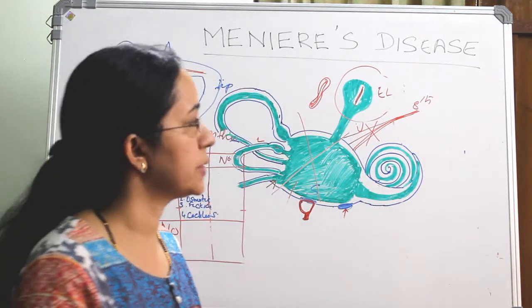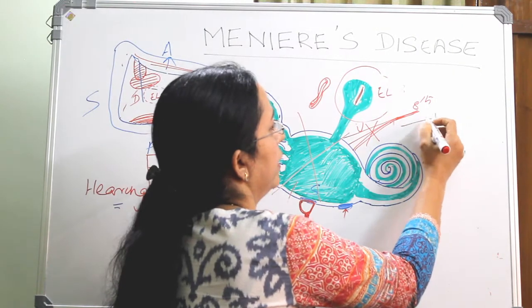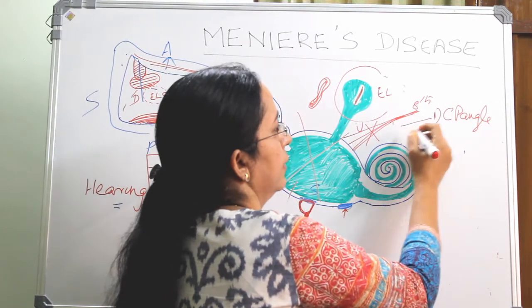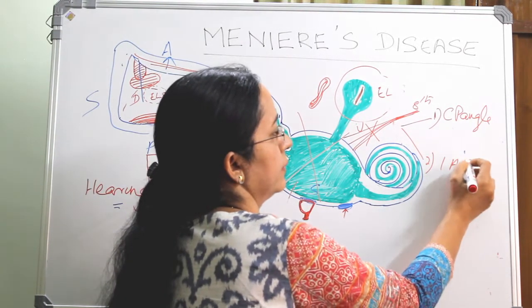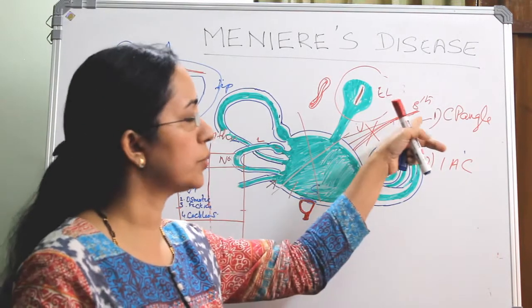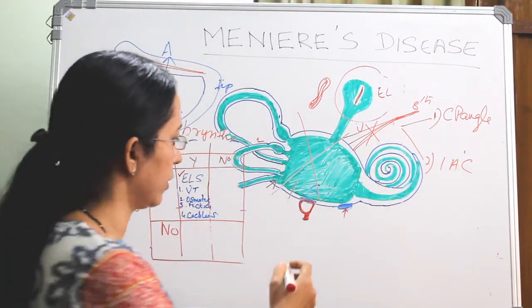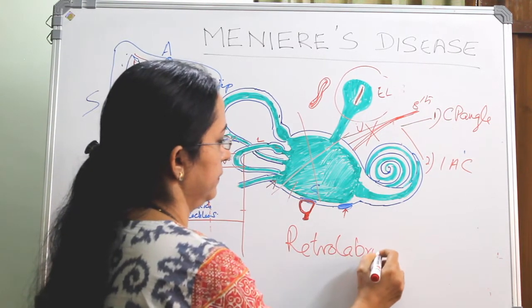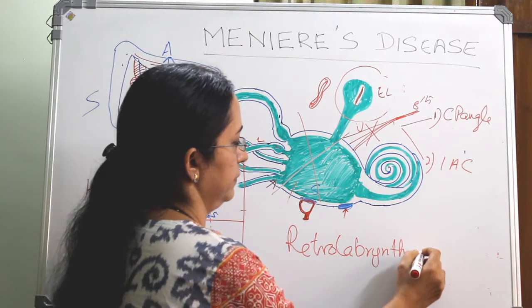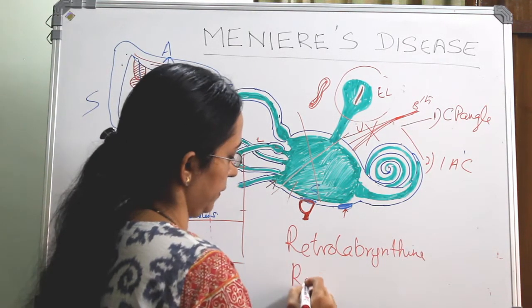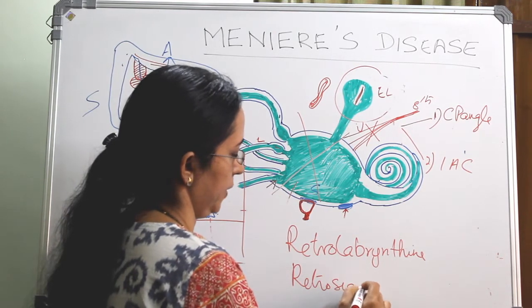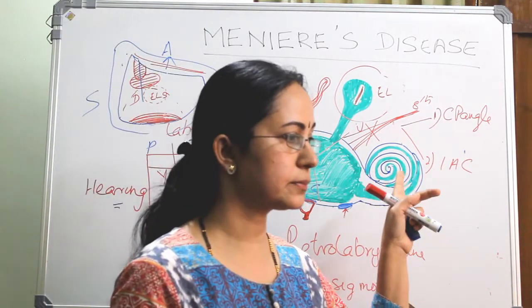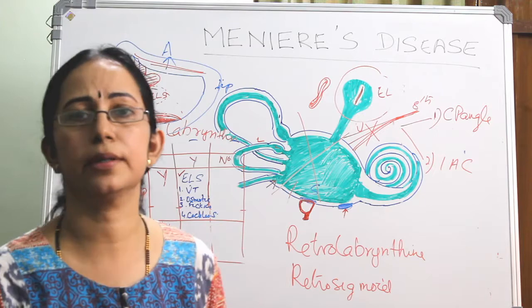For the vestibular component of the eighth nerve, we can approach at two areas: one at the CP angle, and two by the internal auditory canal. At the CP angle, it is through a retrolabyrinthine or retrosigmoid approach. At the internal auditory canal, it is mainly through a translabyrinthine or transmastoid approach.